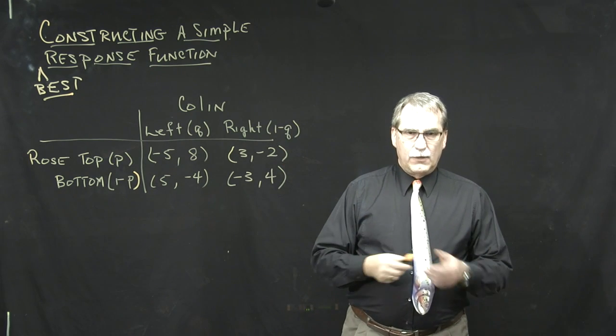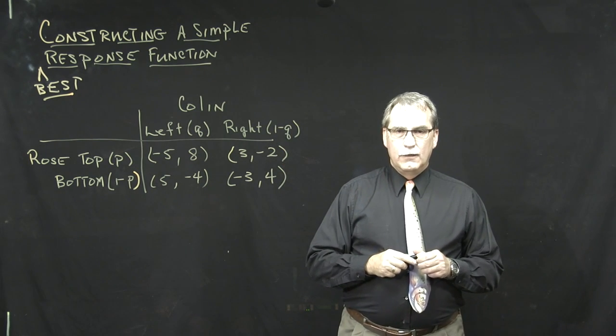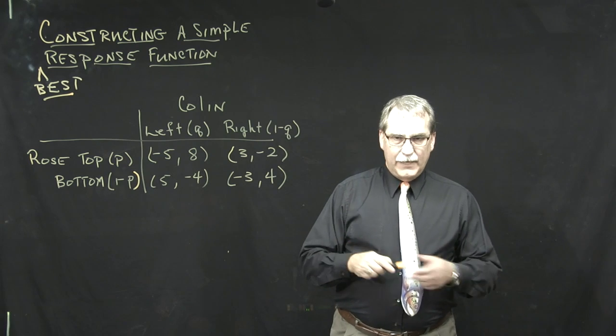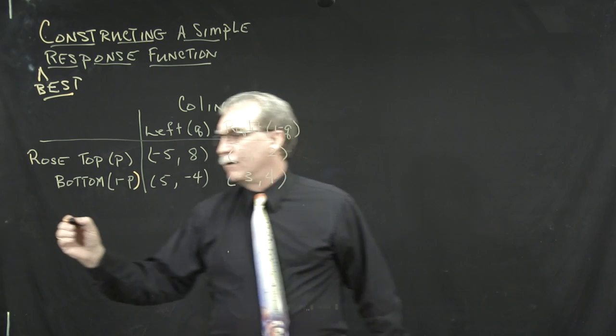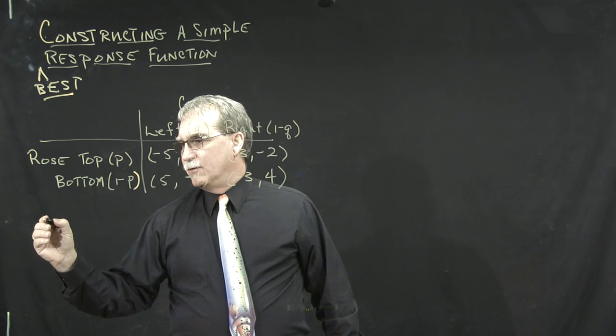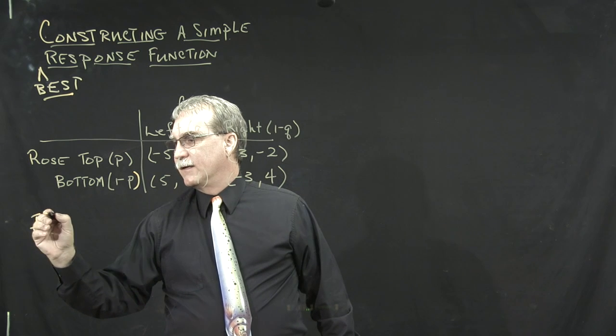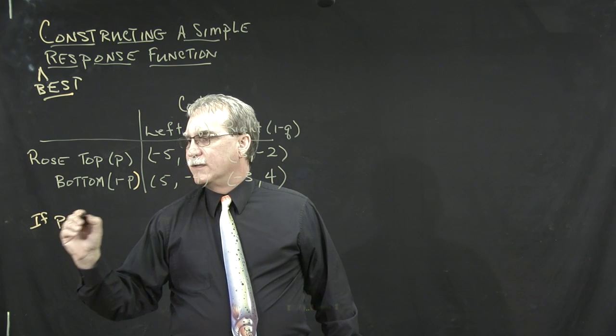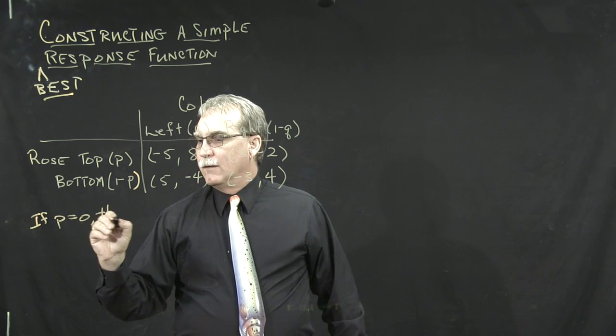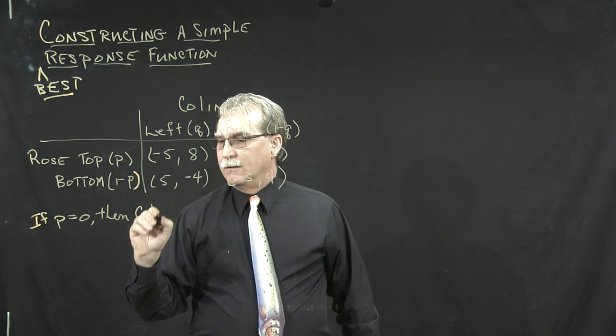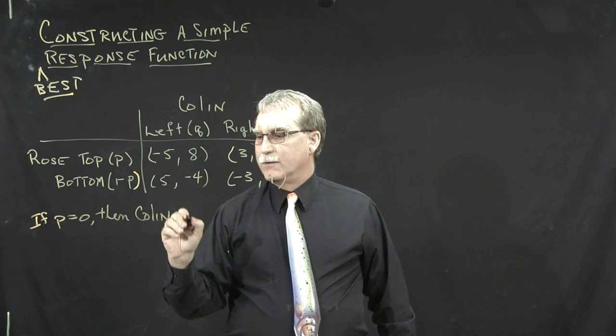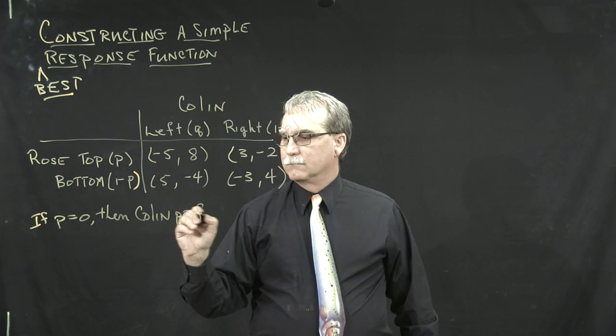To begin constructing our best response function, we consider a couple of base cases. If Rose always chooses the bottom, that is, if P equals 0, then we see that Colin prefers right.